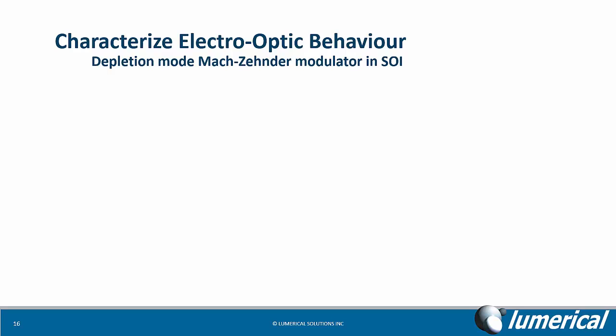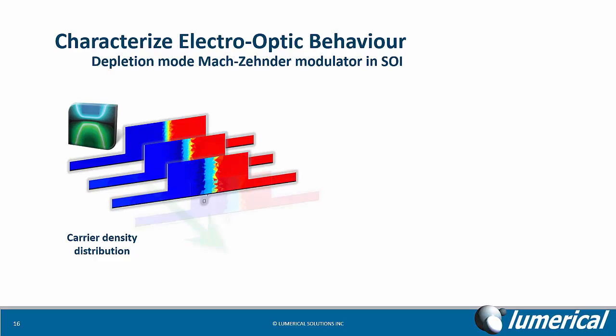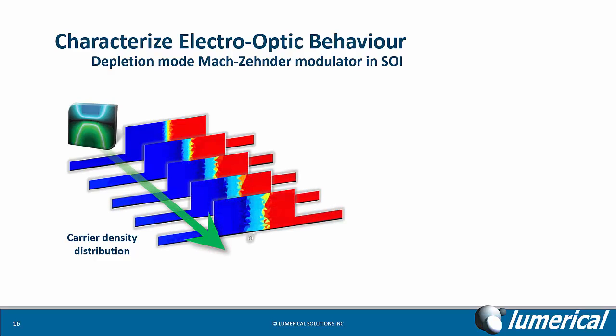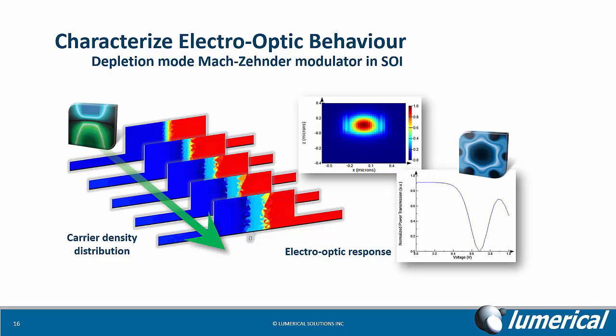Device can also be used with MODE Solutions to simulate the electro-optic behavior of active guided wave components. In this example, we use the charge transport solver to simulate the waveguide carrier density of a depletion mode Mach-Zehnder modulator as a function of increasing bias. This leads to a change in the optical refractive index, and we can use MODE Solutions to calculate the optical modulation response, including the mode profile, the insertion loss, and the extinction ratio.